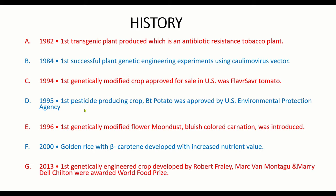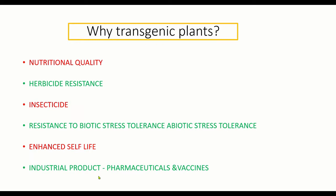In 1995, the first pesticide-producing crop, Bt potato, was approved by the US Environmental Protection Agency - the first GMO crop used for insect resistance. In 1996, the first genetically modified flower, Moon Dust - a blue-colored carnation - was introduced using transgenic technology. In 2000, golden rice with beta-carotene was developed with increased nutritional value. In 2013, the first genetically engineered crop developed by Fraley, Chilton, and colleagues was awarded the World Food Prize.